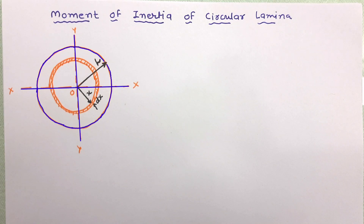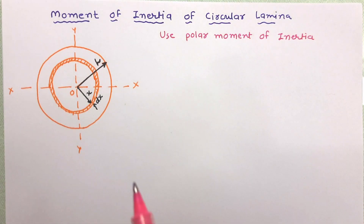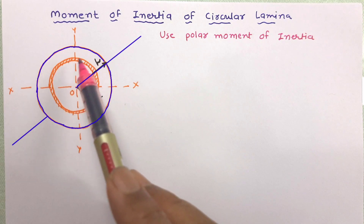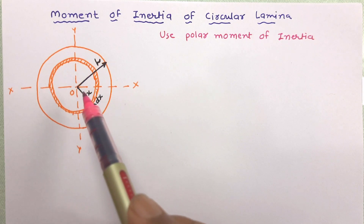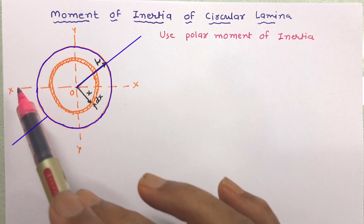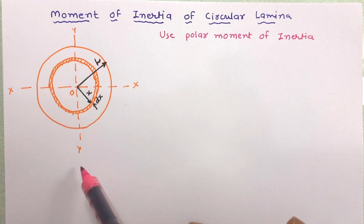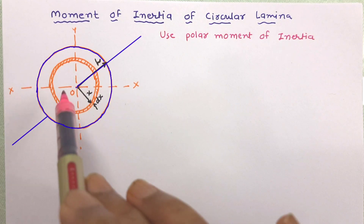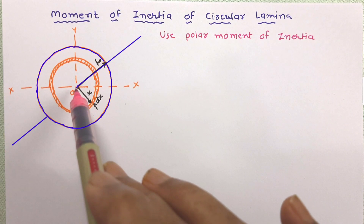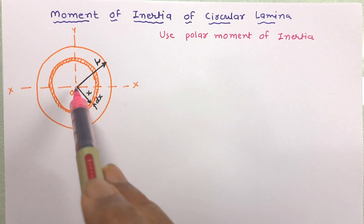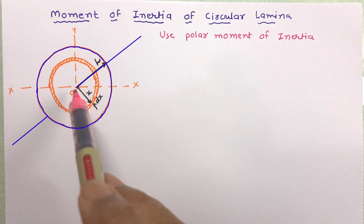Polar moment of inertia is the moment of inertia of any body or lamina about the axis perpendicular to the plane of that lamina. The XX and YY axes are centroidal axes in the plane of the lamina, but the ZZ axis is perpendicular to the plane of the lamina. We want to work out the moment of inertia of this lamina about that ZZ axis.